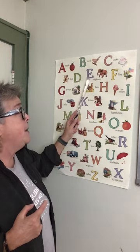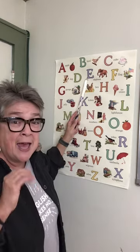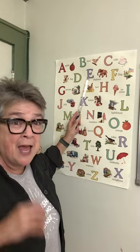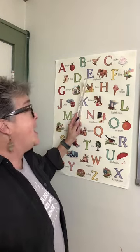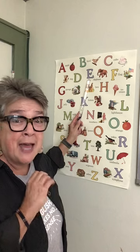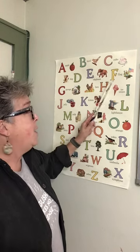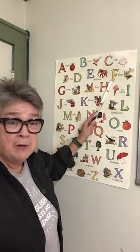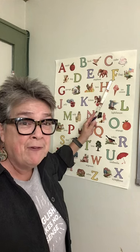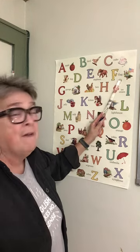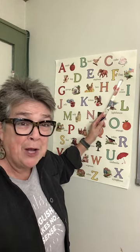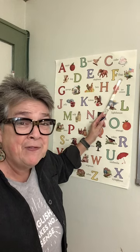E makes the E sound, like an elephant or egg. Then F makes the F sound, like a flag or frog. F.